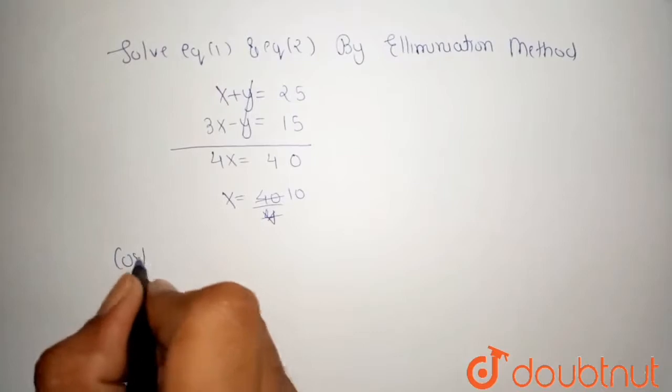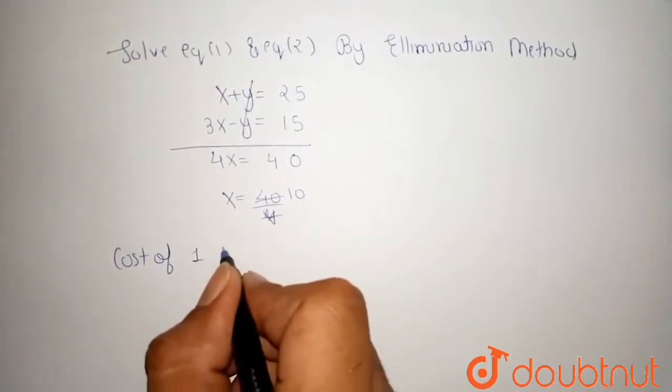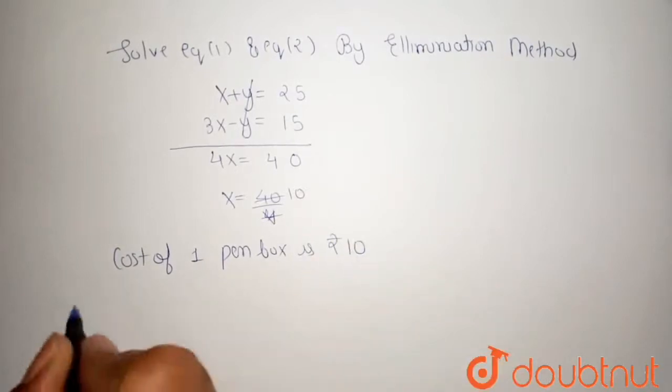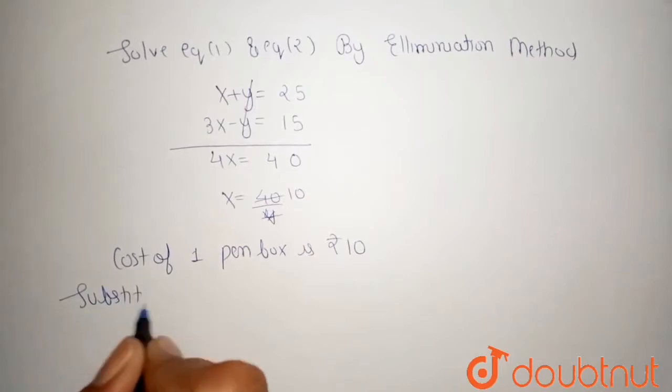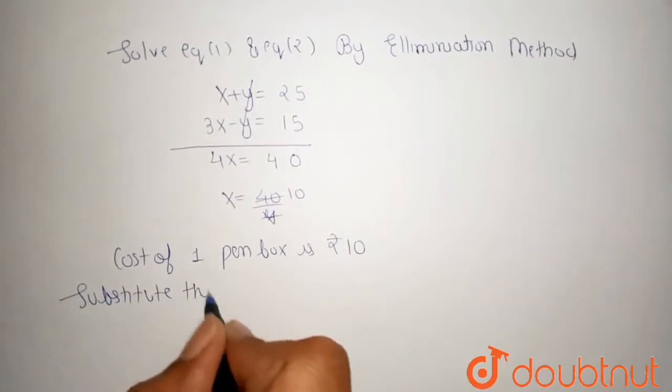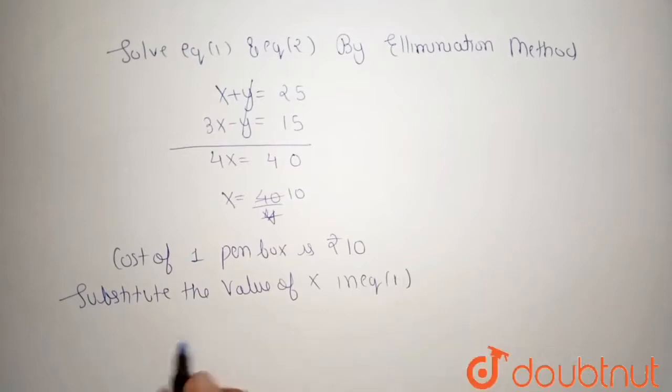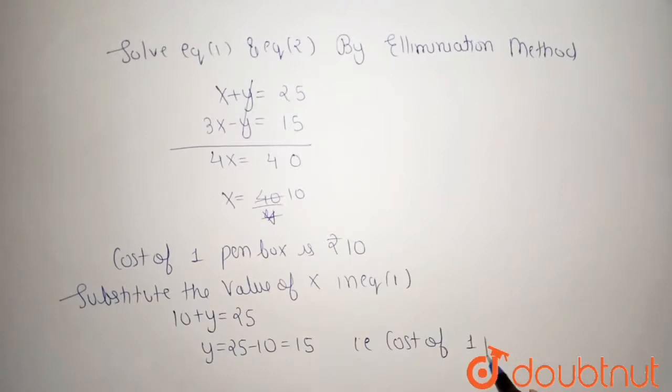After that, substitute the value of x in equation number first. So we get 10 plus y equals 25. So y equals 25 minus 10, that means 15. The cost of 1 pencil box is rupees 15.